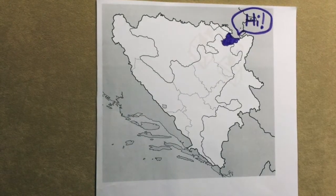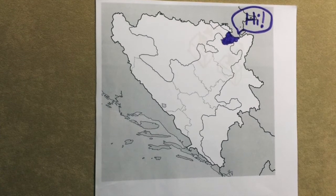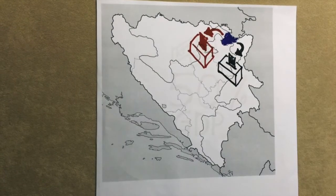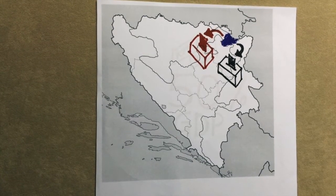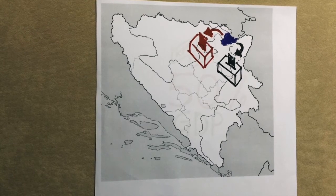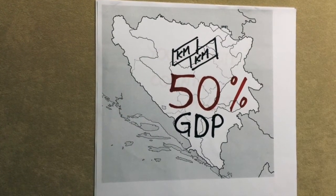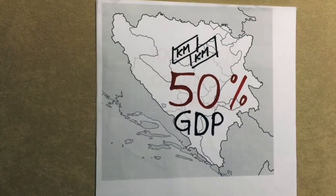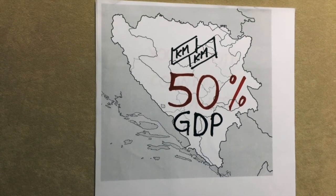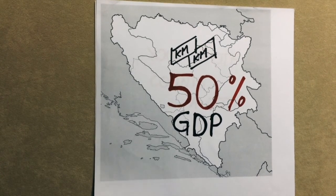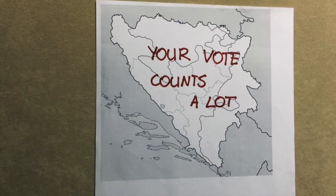If you reside in Brčko, you choose the entity you want to vote in. Your vote is then counted in that entity's closest electoral unit. Bosnia and Herzegovina annually spends 50% of its GDP on administration — which means your vote counts a lot.